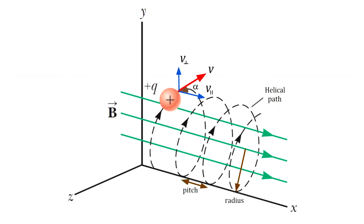Charged particles will move on a path called a helical path. The velocity has two components: the perpendicular component to the magnetic field and the parallel component to the magnetic field. The combination of these components shapes the helix. If you look from the cross-sectional plane, you see circular motion; if you look from the top view, you also see circular motion; and the side view gives you sinusoidal motion.